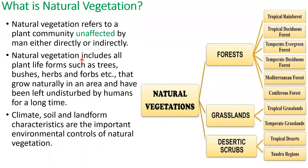Natural vegetation includes all plant life forms such as trees, bushes, herbs, etc. that grow naturally in an area and have been left undisturbed by humans for a long time. Climate, soil, and landform characteristics are the important environmental controls of natural vegetation, and these are the general types of natural vegetation.